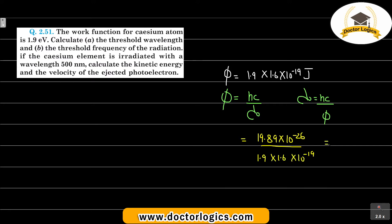When you solve this, it will be 19.89 divided by 1.9, divided by 1.6, which gives 6.542 into 10 raise to the power minus 7 meters. This is the threshold wavelength.